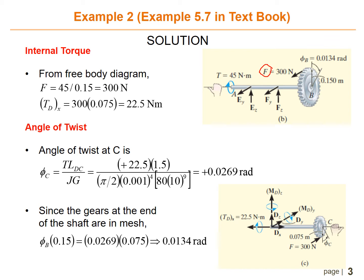F is 45 divided by 0.15 meter, which equals 300 Newton. And then you need to find the torque at D, which equals 300 times 0.075 meter.